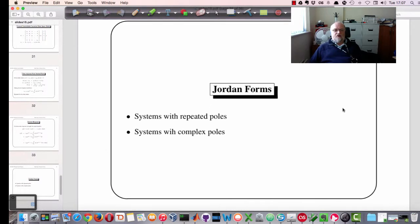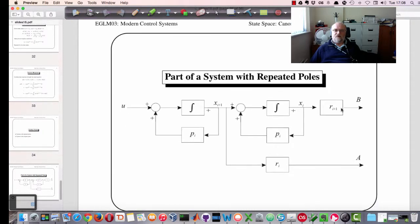Just a couple of other things that are covered in the notes but perhaps won't be covered in detail in the lectures. It is possible to have systems with repeated poles, and we need to deal with those specifically in a special way. And also systems with complex poles may crop up and they need to be dealt with slightly differently as well.